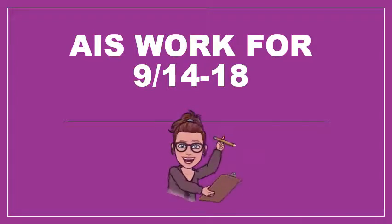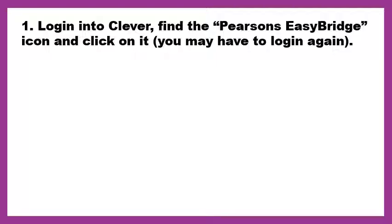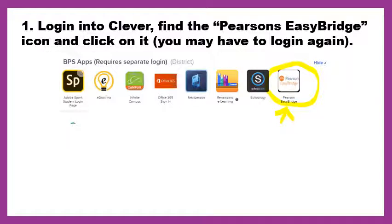Hey AIS students, this is your work for the week of September 14th through September 18th. Your work this week is from Pearson's. To get to Pearson's, you need to log into Clever and find the Pearson's EasyBridge icon — it is a white icon with an orange circle that has a bridge on it. When you click on it, you may have to log in again.